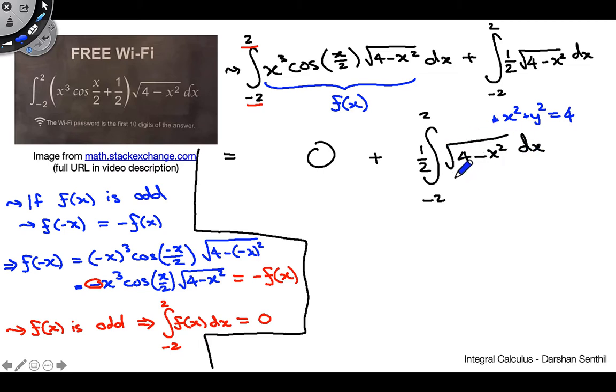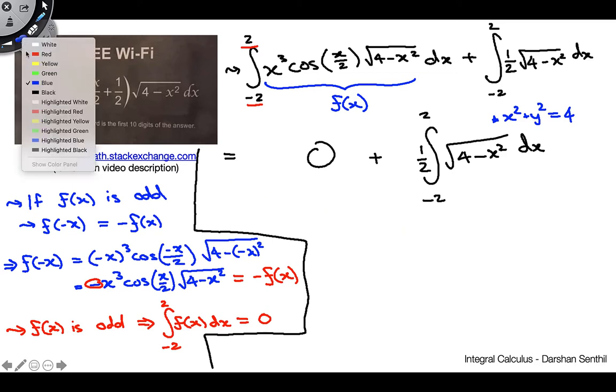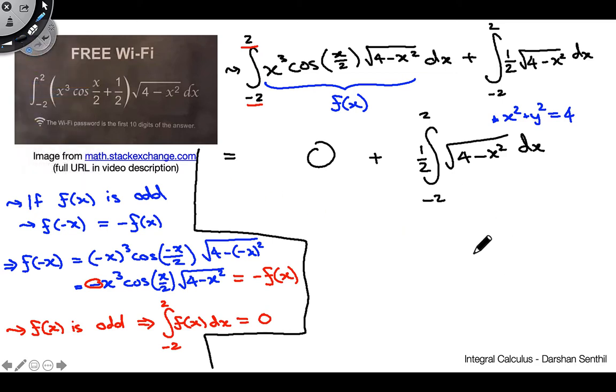So this tells us that this is a semicircle, because it's only the positive root here, with a radius of 2, right? Because this side is r squared. So we can actually just go ahead and find that area geometrically.